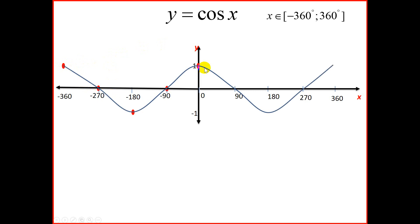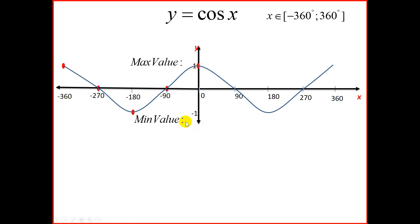Remember in a previous video we drew the positive side of the cos graph, so there we have it — the cos graph. Let's inspect this graph. The maximum value for the cos x graph is 1, the minimum value on the y-axis is negative 1, and that gives us our range to be from minus 1 to 1.